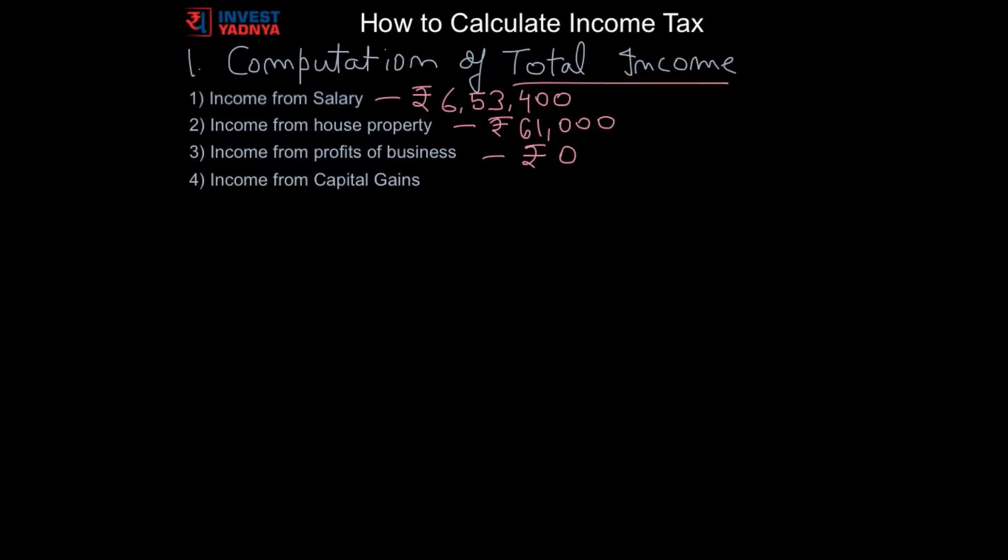Next is income from capital gains. Any gain or loss arising from transfer of capital asset held as investments is put to tax under the head capital gains. Gain can be short term or long term. A capital gain arises only when a capital asset is transferred, for example selling a property or a stock or a mutual fund unit etc. For more details on this please refer to our video on this topic. For simplicity's sake we are considering that Sunil doesn't have any income from capital gains.